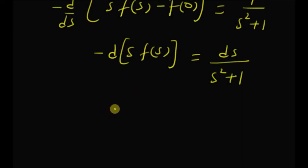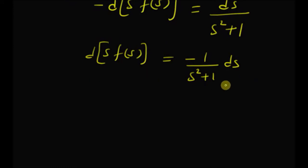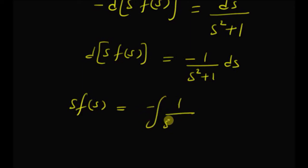Since the derivative of f of 0 with respect to s is 0, we can ignore the second term. This differential equation can be written as: the differential of the product s times F of s is equal to minus 1 by s squared plus 1, ds. Now by integrating on both sides, we have s times F of s is equal to minus the integral of 1 by s squared plus 1, ds.